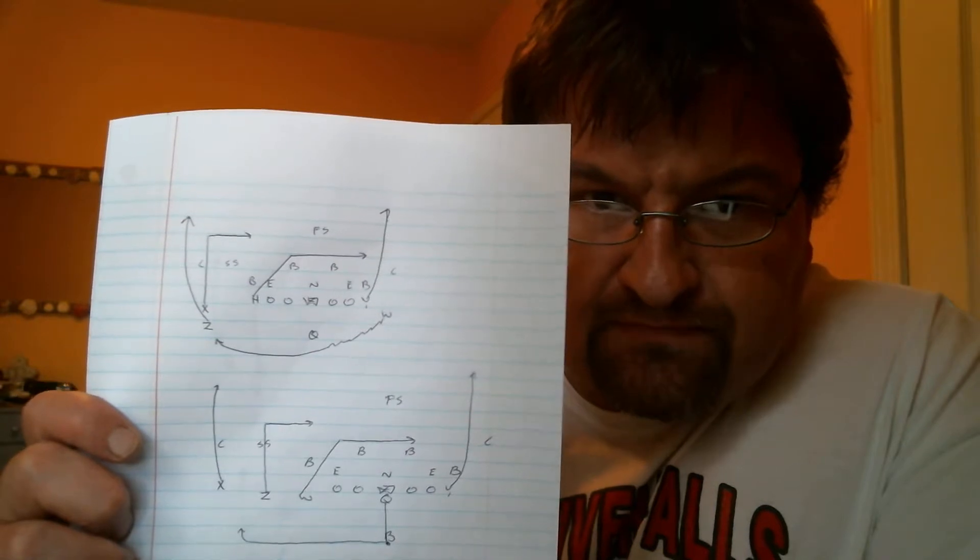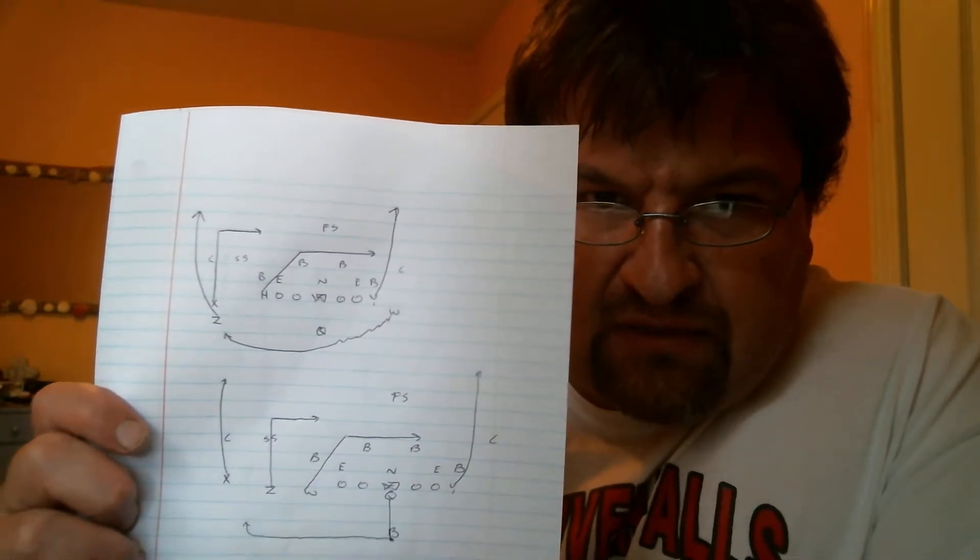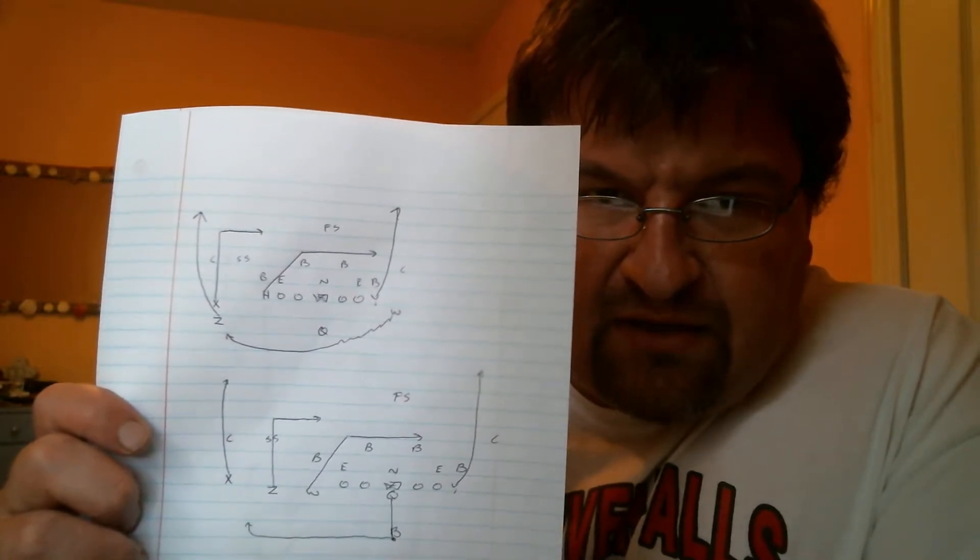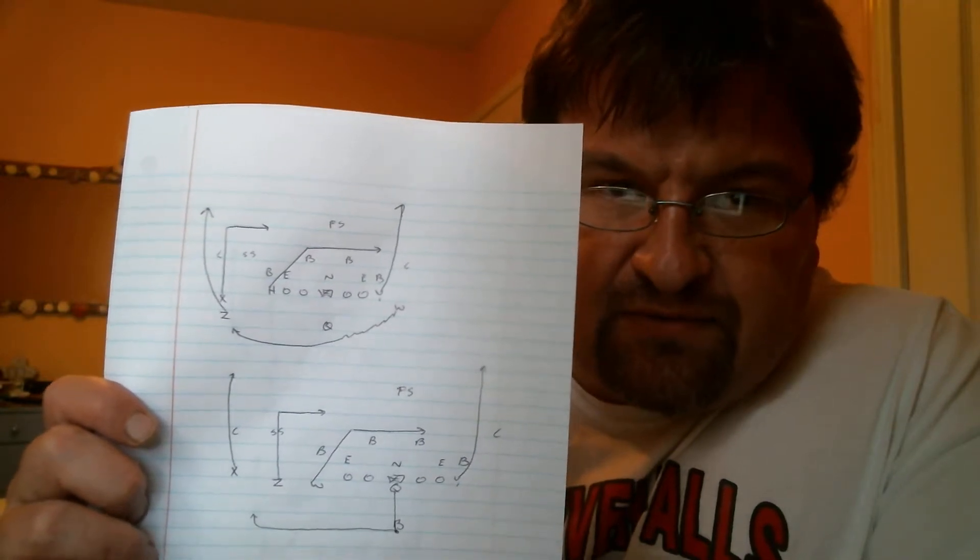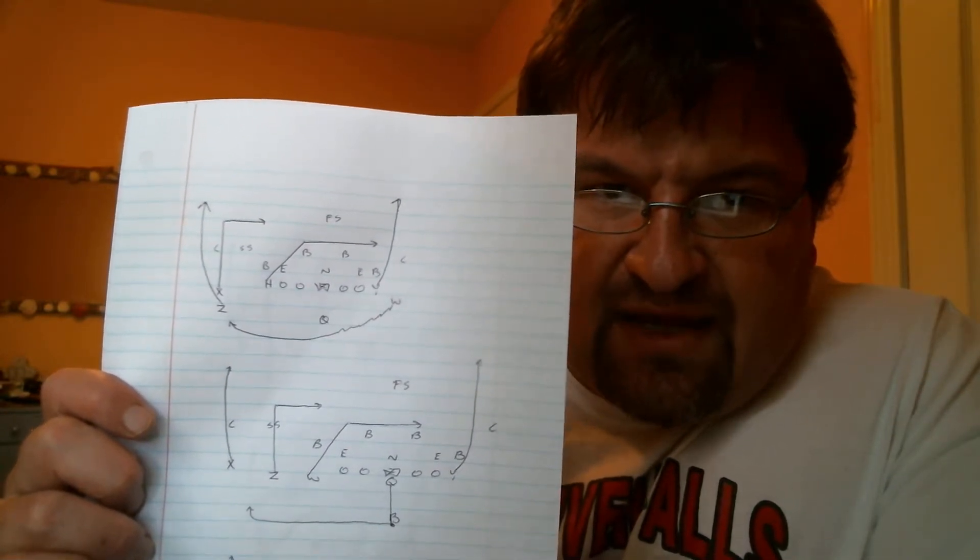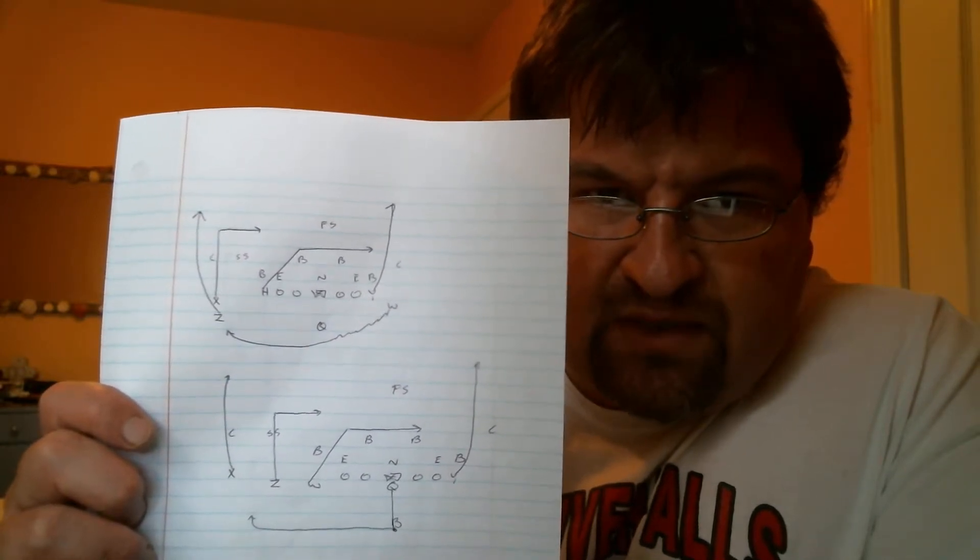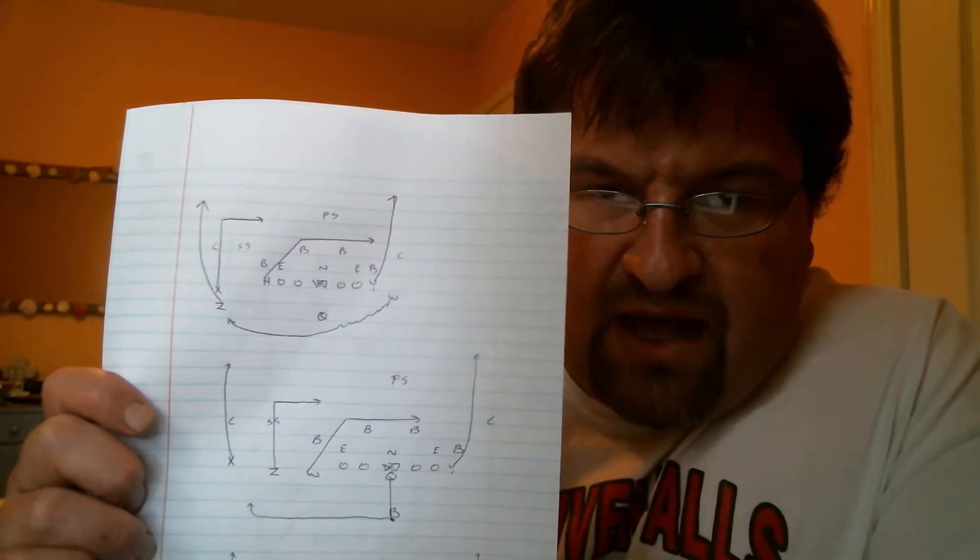Now Y, he's going to run up the seam. What he's doing, he's clearing out. Now if you can hit H underneath, I guarantee you the guy who's going to be covering Y is going to try and attack H on that crossing route, and when he does, you should be able to pop that ball over to Y on the streak seam.